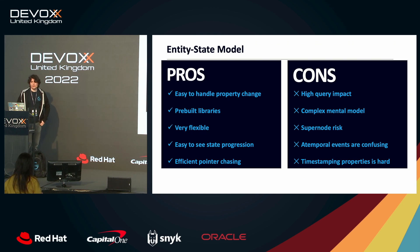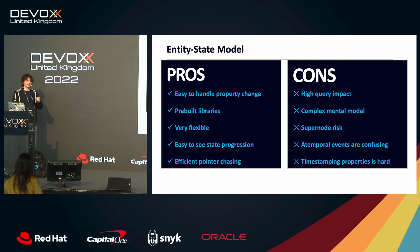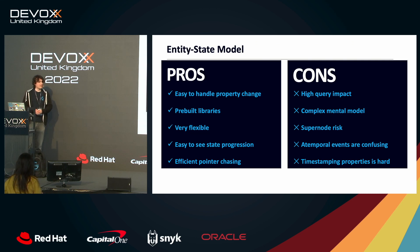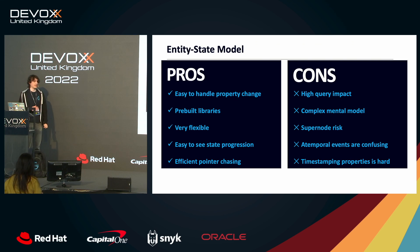Finally, let's have a quick look at the entity-state model. A lot of what we've looked at so far is relatively easy for humans to understand — I've cheated a little by putting as much information as possible in relationships. If you have a node where there are ten copies of the same entity, it's hard for a human to understand and you get supernodes fairly quickly. This is a more general solution but is often over-complicated for many use cases.